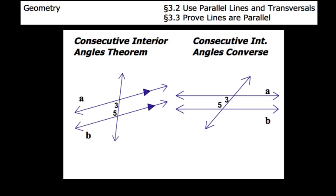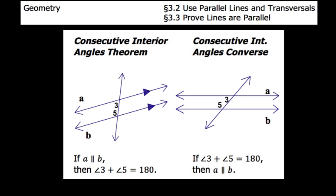For the consecutive interior angles theorem, if line A is parallel to line B, then consecutive interior angles — which in this case are 3 and 5 — are equal to 180, or supplementary. Likewise, for the consecutive interior angles converse, if we know that two consecutive interior angles are supplementary, then we can conclude that lines A and B are parallel. Again, these aren't the only pair of consecutive interior angles, but they're the pair used in this diagram.